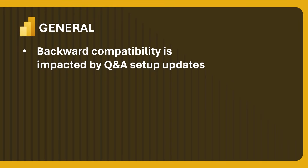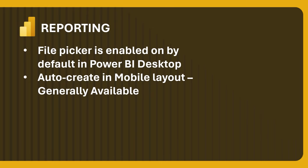First, a general Power BI update: backwards compatibility is impacted by Q&A setup updates. We introduced a version bump to the linguistic schema underlying Q&A setup tooling. After installing the April desktop update, if you continue to modify your linguistic schema in Q&A setup — such as adding synonyms, phrasings, or suggested questions — you won't be able to open that file with older versions of Power BI Desktop, such as March or February 2025 or any previous version. You need to spread this news throughout your organization.